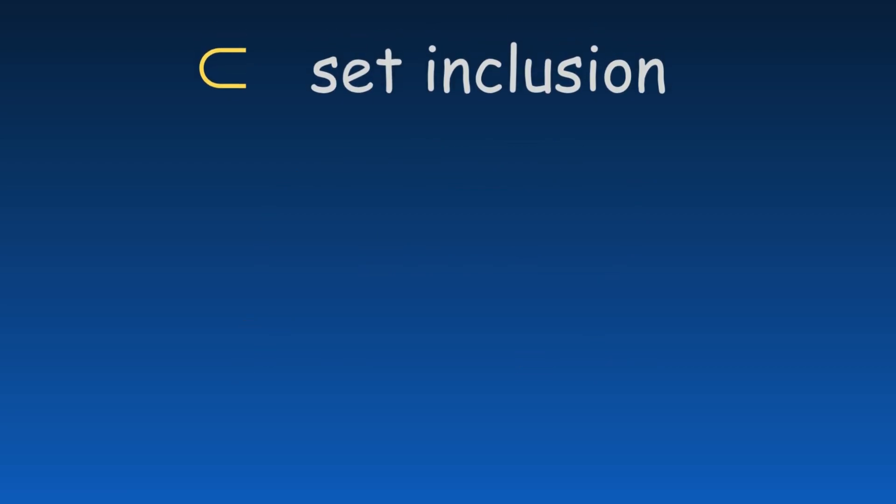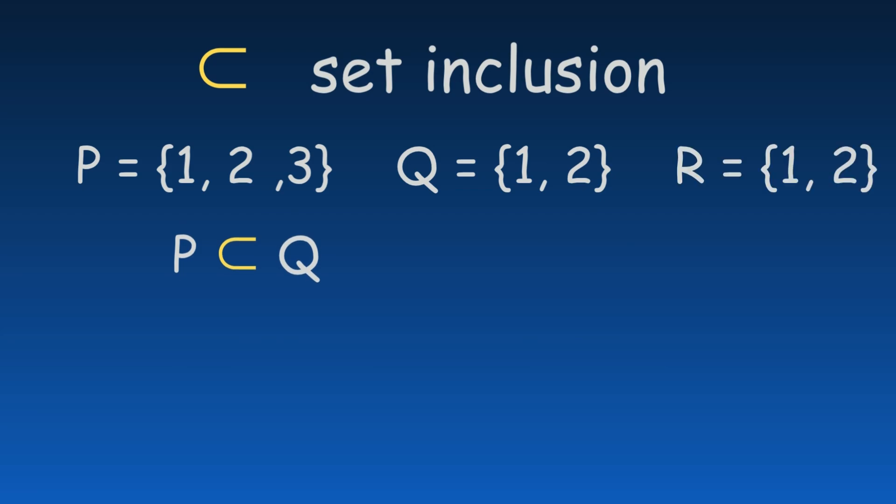The set inclusion symbol shows that one set is a subset of another. When a line is added to it, the symbol still shows set inclusion but also allows for the sets to be equal. If that line is crossed, the symbol represents a proper subset, meaning the sets are not equal. The smaller set is fully contained within the larger one but is not the same.